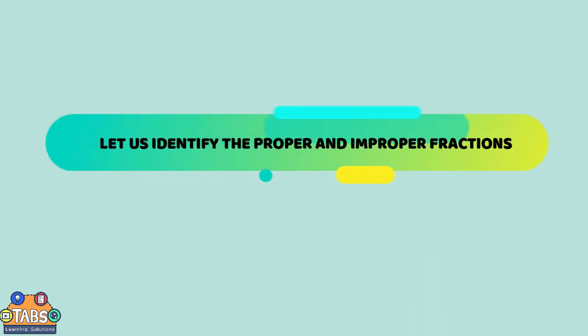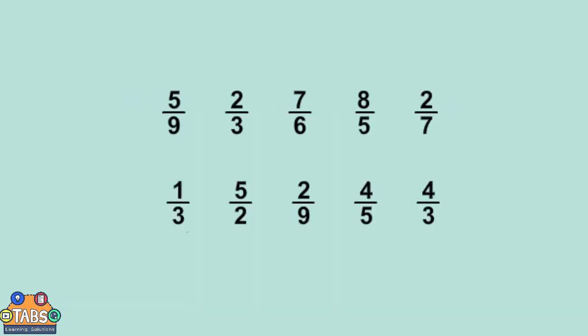Let us identify the proper and improper fractions. These are the proper fractions because the numerators are less than the denominator. Well, these are the improper fractions since the numerators are larger than the denominators.